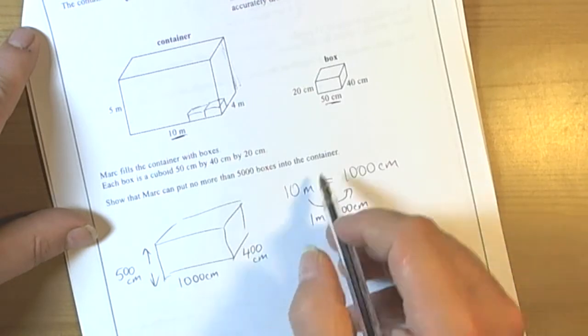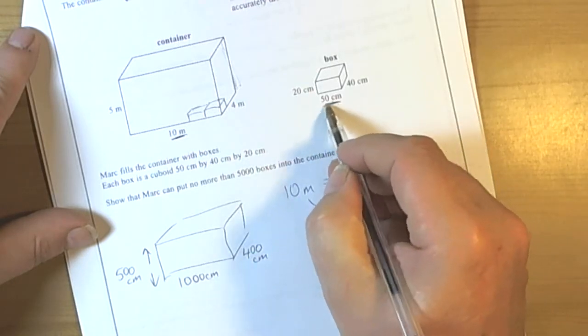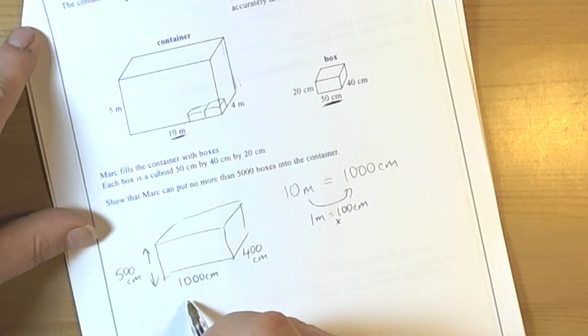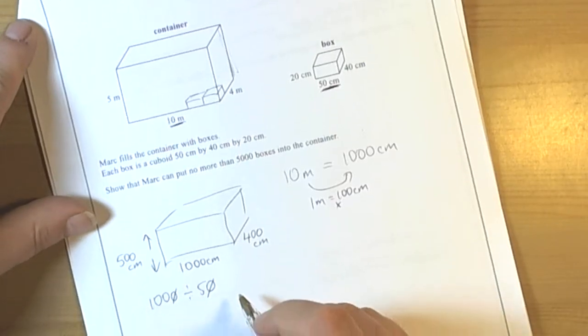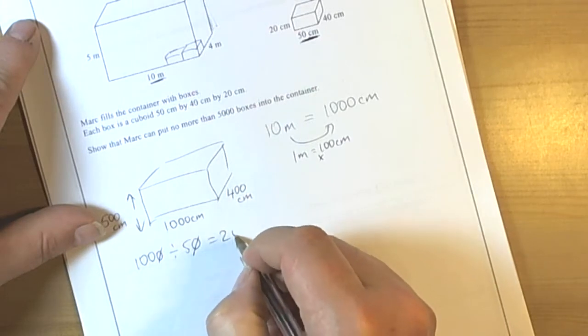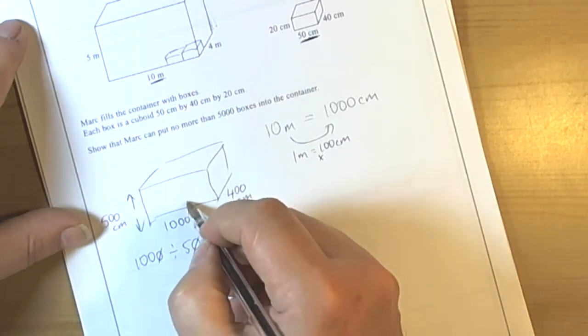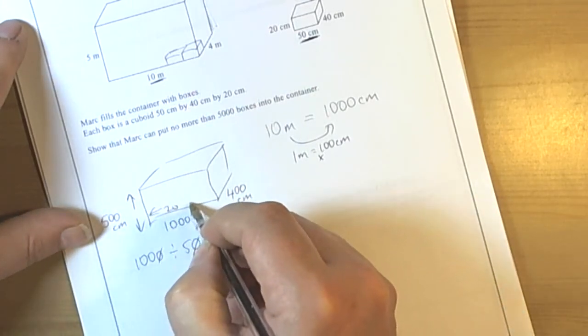If we look at the box, it's got a fifty centimeter length. So if we do a thousand divide by fifty, dividing with multiples of ten means we can divide both by ten to start with. So we're saying how many fives are there in a hundred? Well that would be twenty. So we know that this way we can fit twenty boxes.